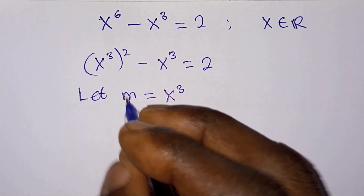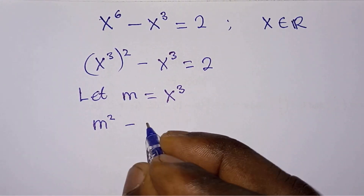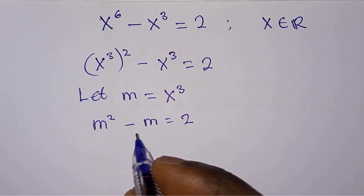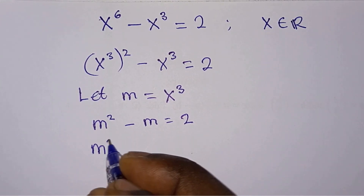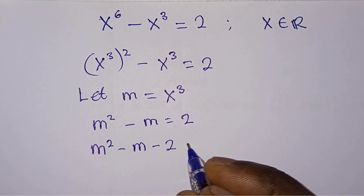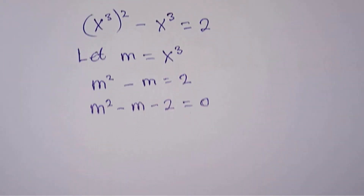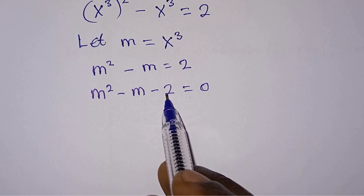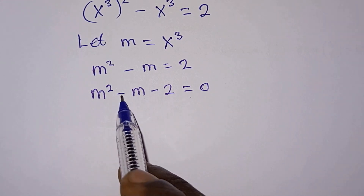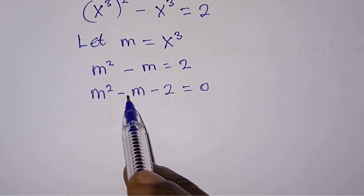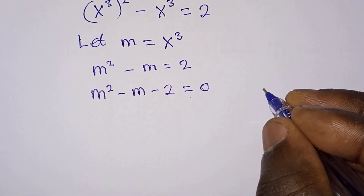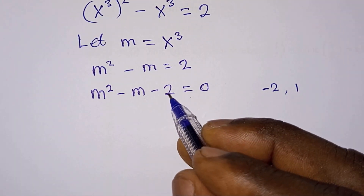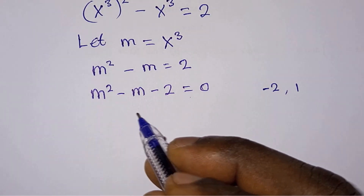So the equation now becomes m squared minus m is equal to 2. Since we have a quadratic equation, we will equate everything to 0, so we have m squared minus m minus 2 is equal to 0. Then from here we will find two values that when you multiply them you get negative 2, but when you sum them you get negative 1, because the coefficient of m is 1. The values are negative 2 and 1: negative 2 times 1 is negative 2, and negative 2 plus 1 is negative 1.